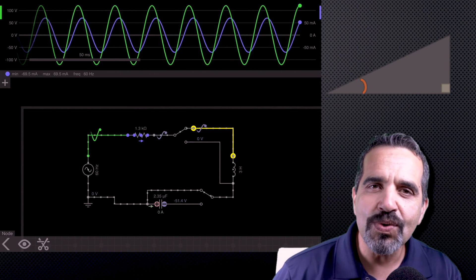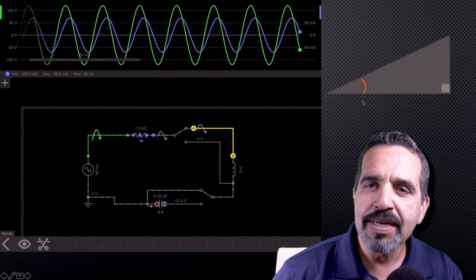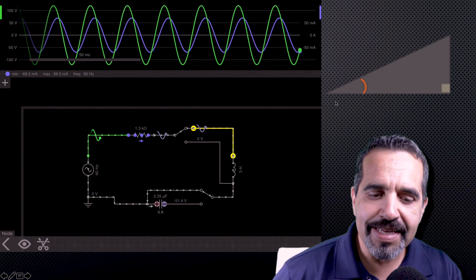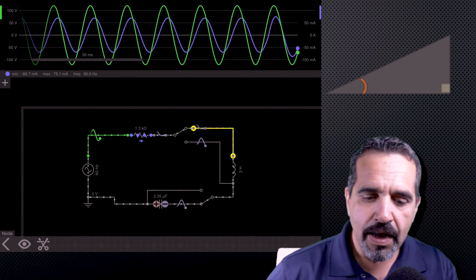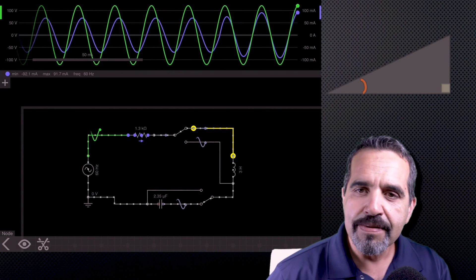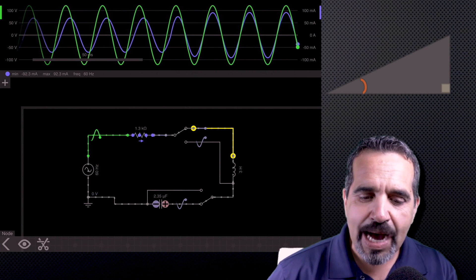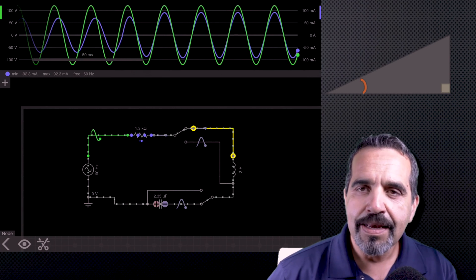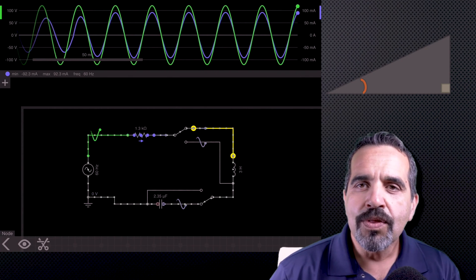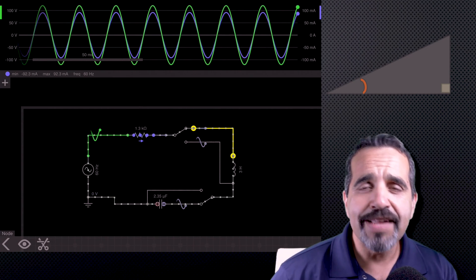So the point of power factor correction is to find out how much this angle is and what we can do to reduce that phase shift and to get our circuit back into phase. So here I'll add some capacitance to our circuit and now we're back in phase. And the point of this video is to explain what power factor is.